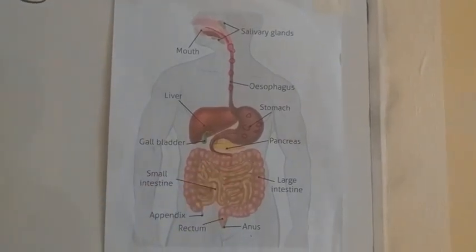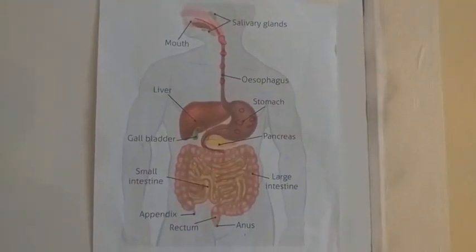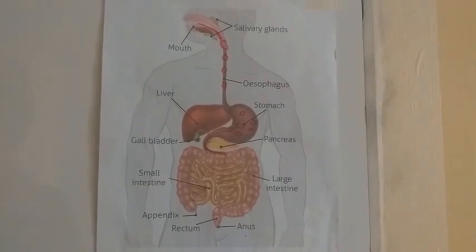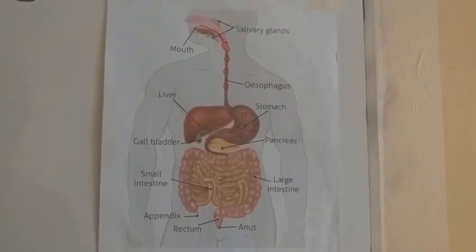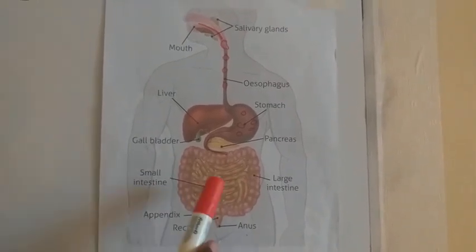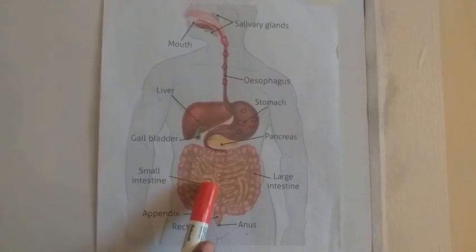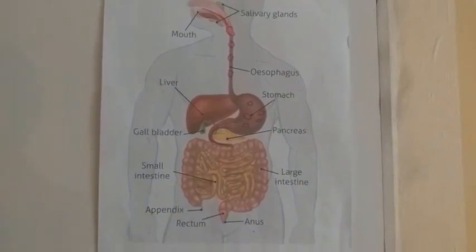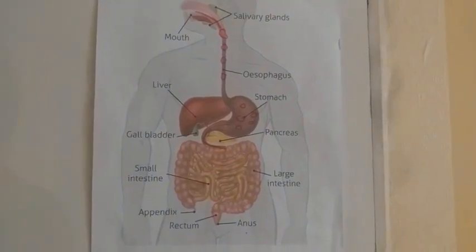In the small intestine, food is digested further, and after digestion is completed, the food is absorbed into the walls of the small intestine.